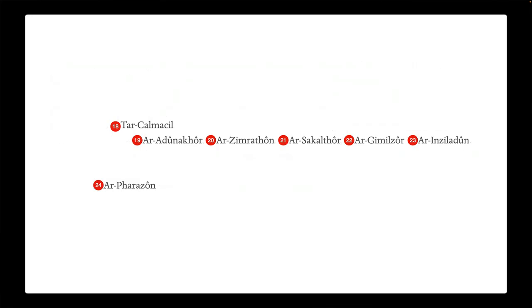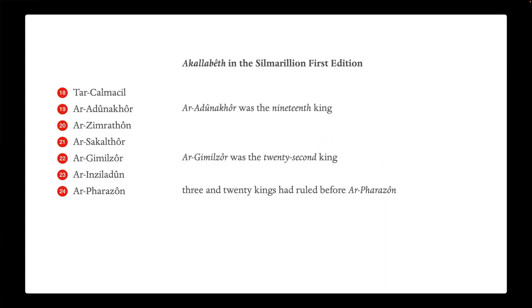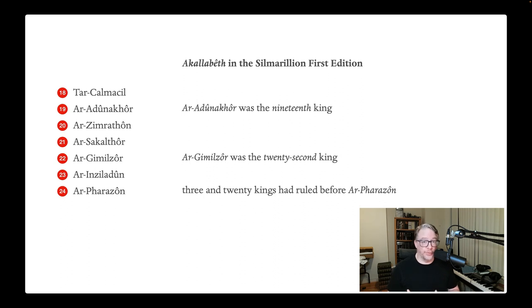Robert Foster in 1971 published the Guide to Middle-earth — not yet the Complete Guide — basically following the kings list. Now if we look at the Akallabêth in the first edition of the Silmarillion, something like this one here, we'll see that it too follows the kings list in Lord of the Rings. Whether Christopher was influenced by Foster in going with that decision, it's not clear. But the first edition of the Silmarillion goes with Adunakhor being the 19th, Gimil-Zôr being the 22nd, and Ar-Pharazôn being the 24th ruler, having 23 rulers before him.